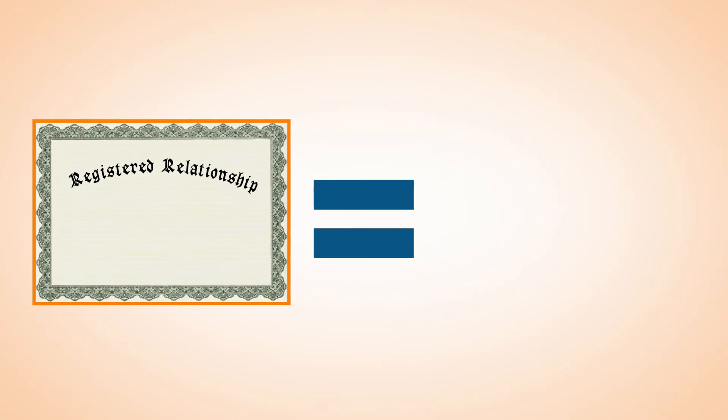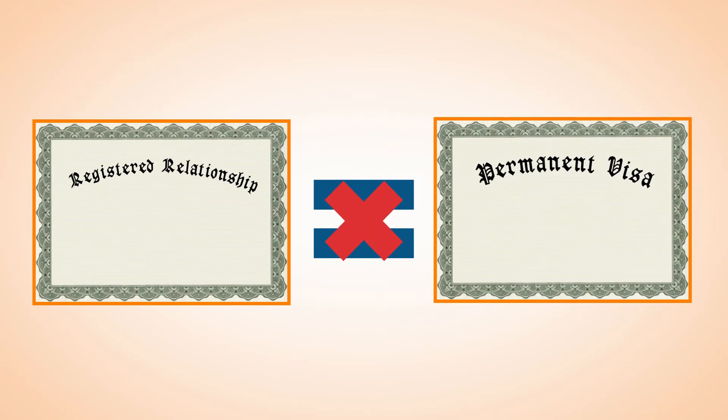When we also have a look at the benefit of registration of relationship or civil partnership, which is available in some states, it's a very similar situation. Again, it's not going to be the magic piece of paper that guarantees a partner visa grant. You still do have to prove the period that you've known each other, the genuineness of your relationship.